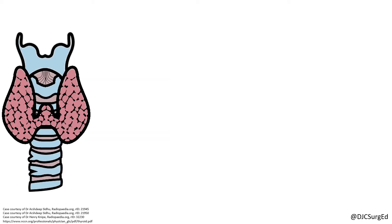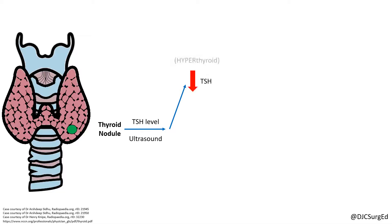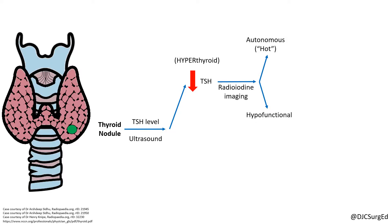For a patient with a thyroid nodule, the first step is to measure the serum TSH and perform an ultrasound of the thyroid and neck. A nodule with a low TSH is concerning for hyperthyroidism and should undergo radioiodine imaging to determine if it is autonomously functioning.